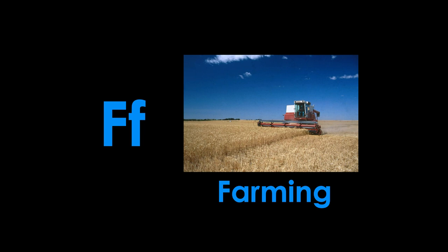F is for farming. Farming is very important in Kansas. Farmers grow wheat, corn, soybeans, cotton, milo, and many other crops. This photo shows a farmer harvesting a field of wheat. Growing wheat on Kansas farms is so important that Kansas is known as the bread basket of the world. Why bread basket? Because most bread is made from wheat.